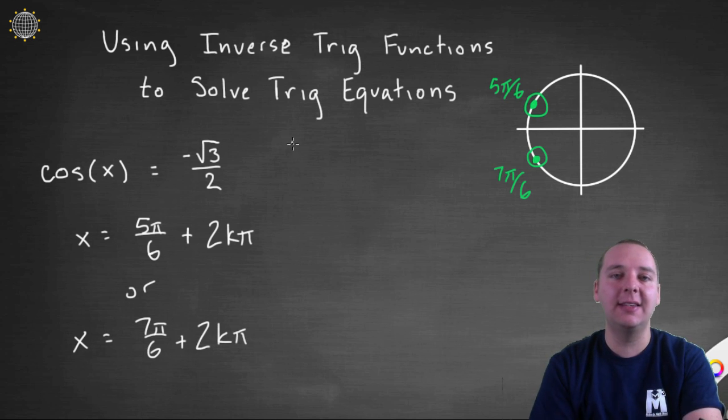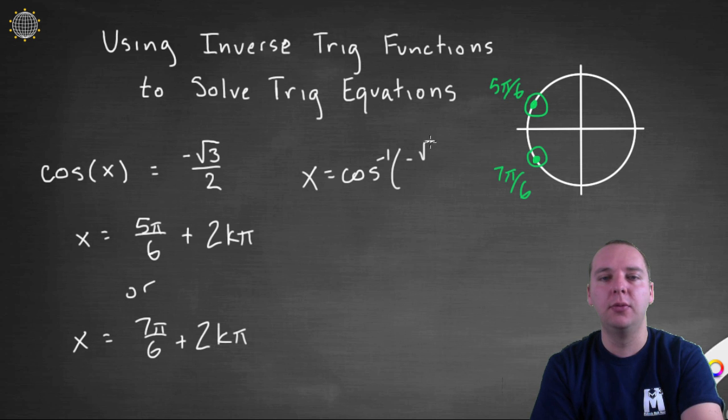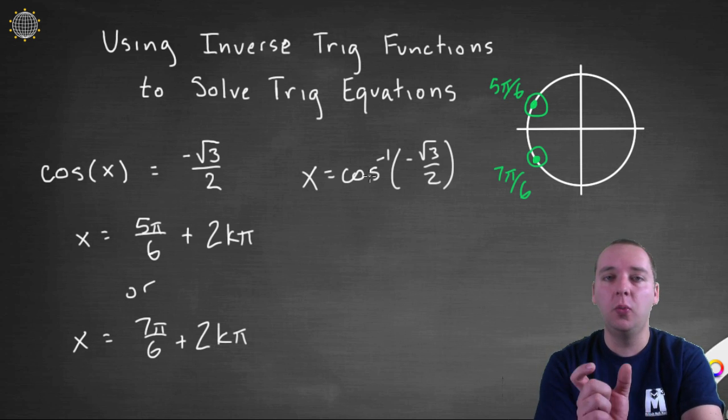Matter of fact, doing it this way even has the added advantage of not restricting our domain. If we looked at the inverse cosine and said our definitive answer is x equals cosine inverse of negative root 3 over 2, you'll remember that this is a one-to-one function that there's only one answer. You don't get all the solutions that we should get like we do this way.